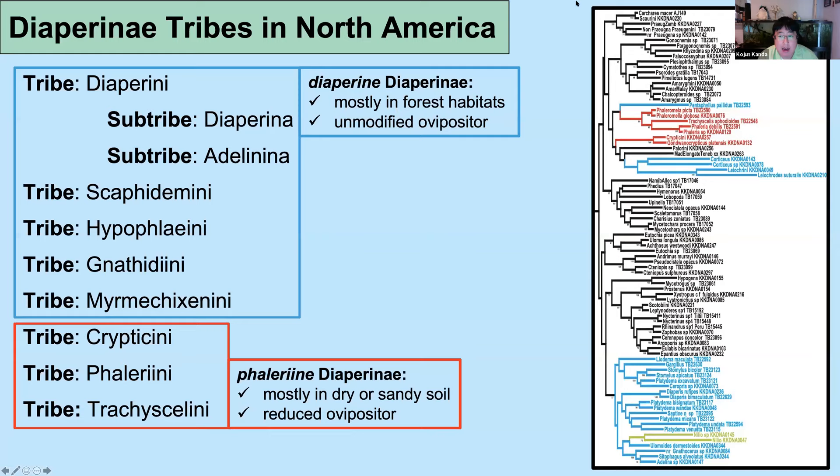We can broadly divide this subfamily into two groups of tribes: the Diaperine Diaperini and the Phalyrine Diaperini. The Diaperine Diaperini are mostly inhabiting forests with many fungivorous species, while the Phalyrine Diaperines are mostly associated with dry or sandy soil habitats — chaparral or beaches and that kind of thing. When molecular data are applied to these traditional classifications, the morphological groupings are breaking down and those two larger groupings are not being recovered as monophyletic.